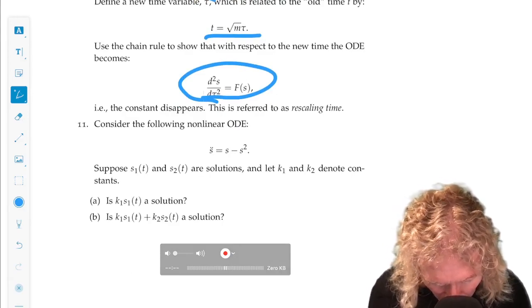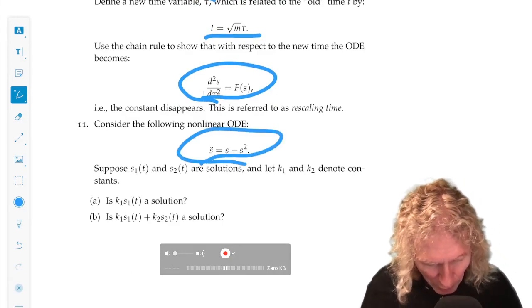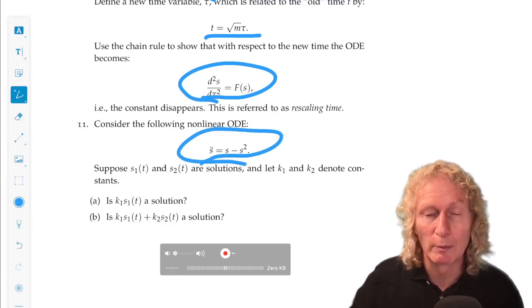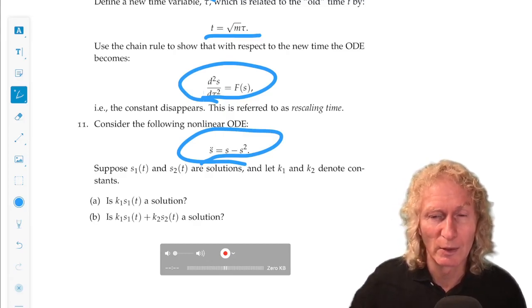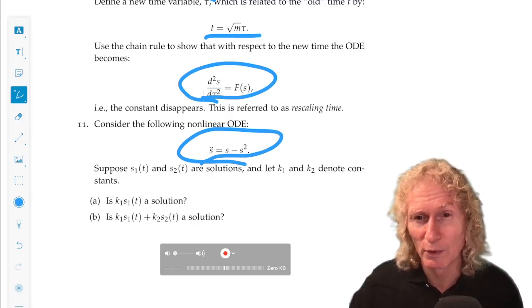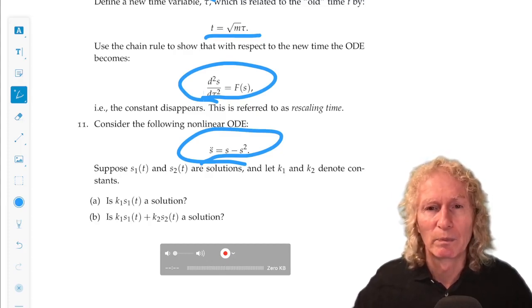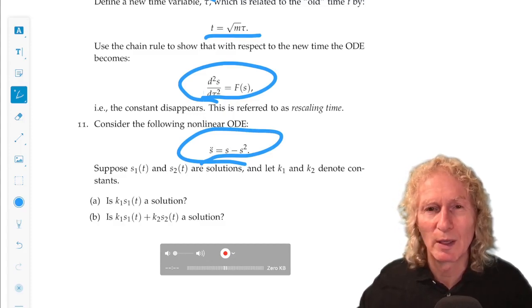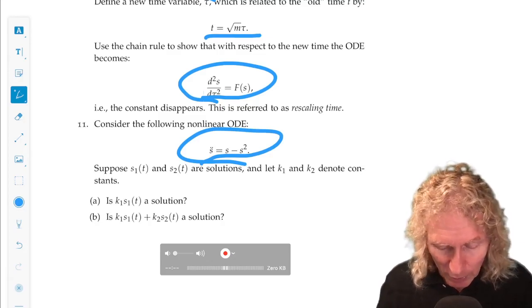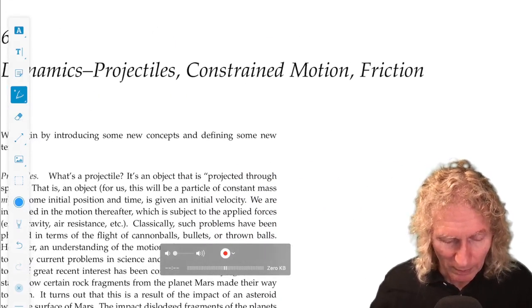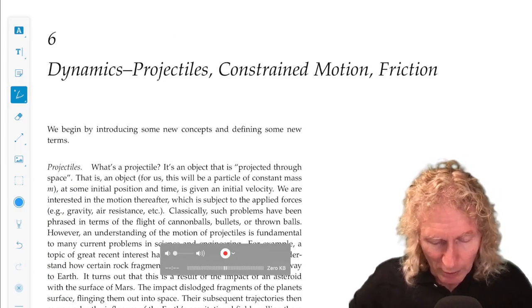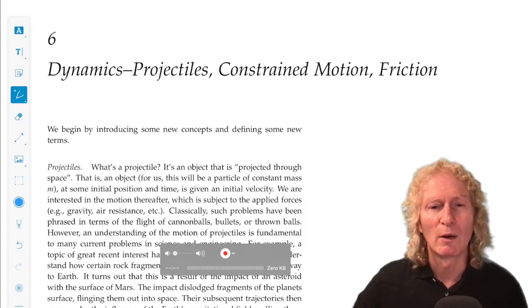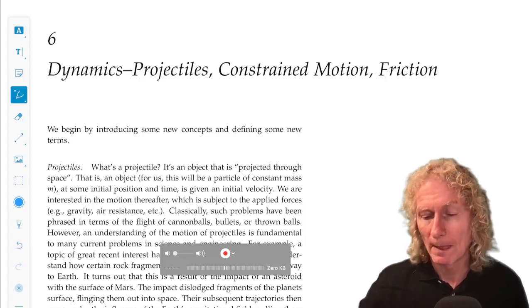And finally, we have a nonlinear system. I want you to show that the superposition principle, as discussed in the earlier problem, does not hold for nonlinear systems. And that's a big deal. That's a big difference between linear and nonlinear systems. So these are the problems. Do all of them. You have the solutions in the solutions manual. And in the next chapter, we're going to talk about projectiles, constraint motion, and friction. There are three problems in this chapter. And all three illustrate something very interesting. So bye for now.